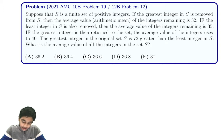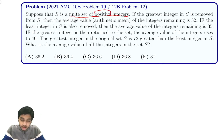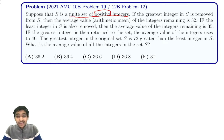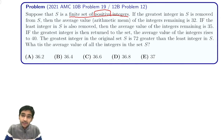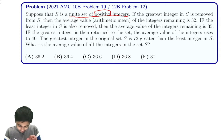Suppose that S is a finite set of positive integers. If the greatest integer of S is removed from S, then the average of the remaining integers is 32. But if the least integer is removed, the average of the remaining integers is 35. The greatest integer is returned to the set, and now the average value rises to 40. And we're saying that the greatest integer in the original set is 72 greater than the least integer.